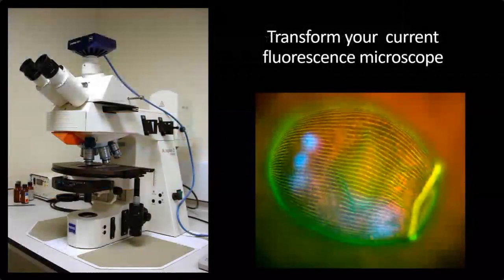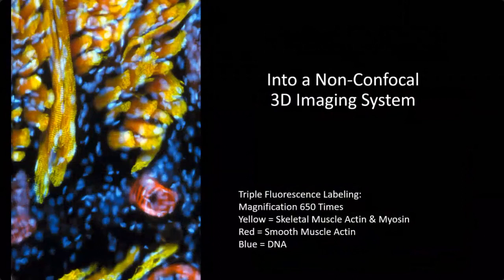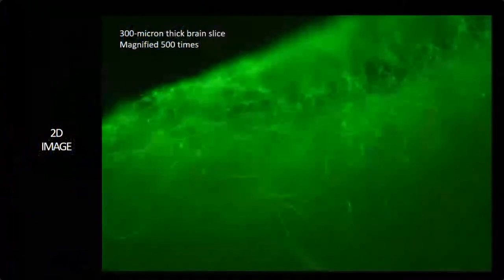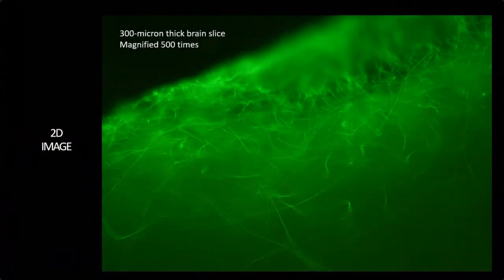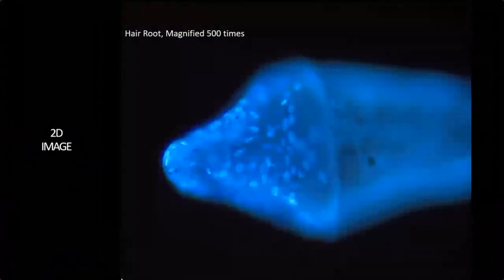For fluorescence microscopy, you can now turn your fluorescence microscope into a non-confocal 3D imaging system with results very similar to a confocal microscope, except you're using your existing illumination system rather than lasers. Here, for example, is a 300 micron thick brain slice that has been cleared. This is the 2D image of it, and here in 3D you can see much more depth of field. With the rotation, you can see the foreground from the background.